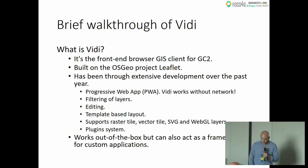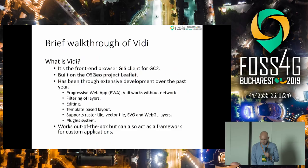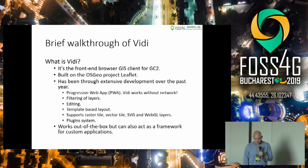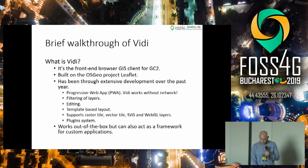Now we've covered GC2 basics — setting up layers and exposing them in services. Now we access them through the browser GIS software, Vidi. It's a younger project, only a couple of years old, but with extensive development over the last year. Key features: it is a progressive web app, works offline, you can filter layers, edit layers, it's template-based for custom look, supports raster tiles, vector tiles, SVG layers, and WebGL layers, and has a plug-in system for extended functionality.